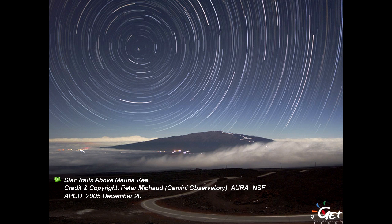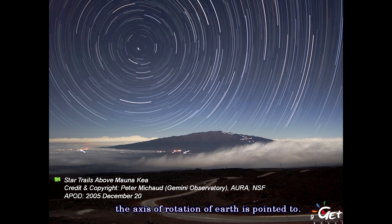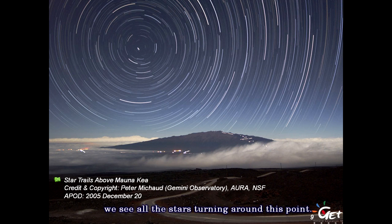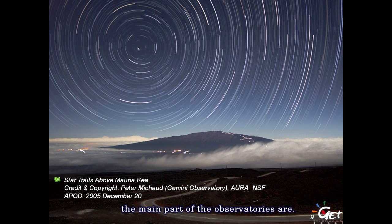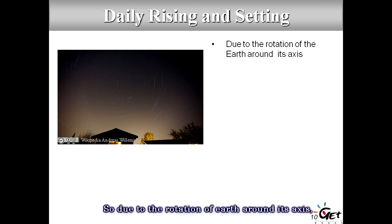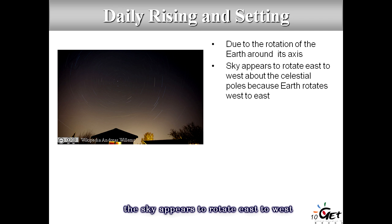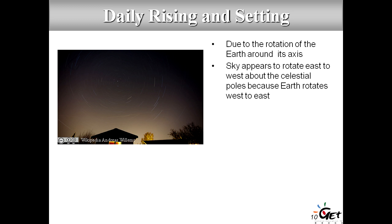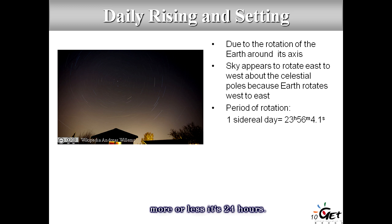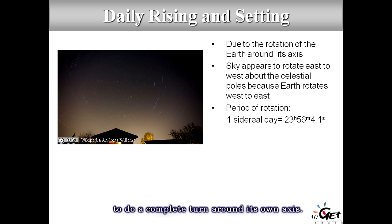Where Polaris is, that is just the direction toward which Earth's axis of rotation is pointing. As a result, we see all the stars turning around that point. This is Mauna Kea, an observatory mountain in Hawaii — this picture was taken from there. Due to the rotation of the Earth around its axis, the sky appears to rotate east-to-west above the celestial poles, since Earth is actually rotating west-to-east. The period of rotation is about 24 hours — this is what we call a day.